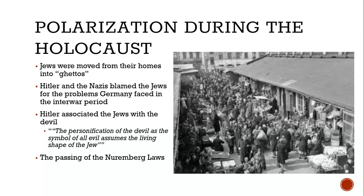During the Holocaust, Jews were moved from their homes into ghettos — segregated areas in a city — making it easier to classify and later round up those people. Hitler and the Nazis were blaming Jewish people for Germany's problems in the interwar period, using them as a scapegoat. Hitler associated Jews with the devil, saying 'the personification of the devil as the symbol of all evil assumes the living shape of the Jew.' The passing of the Nuremberg Laws only increased the polarization.